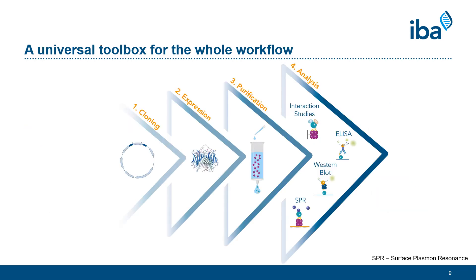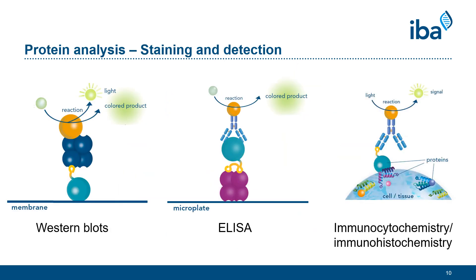After your protein has been successfully purified, it is ready to be used for further downstream applications. With the StrapTech technology, various methods for standard detection — for example, quantification of proteins from diverse samples — are possible. These techniques include Western blots, enzyme-linked immunosorbent assay (ELISA), immunohistochemistry and immunocytochemistry, and also flow cytometry.